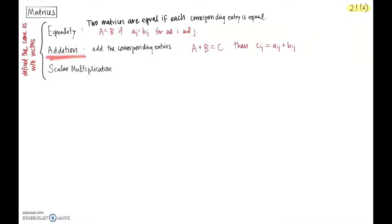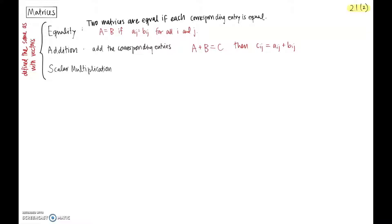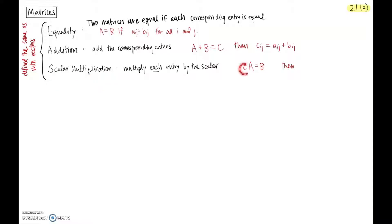Addition of matrices is what you'd expect: the matrices have to be the same size and you just add the corresponding entries. If you have two matrices A and B, you get a new sum matrix where any entry is obtained by adding the corresponding entries of A and B. Scalar multiplication is the same story: you take a scalar c — a lowercase letter, a real number — and multiply each entry in the matrix by that scalar, yielding a new matrix B.